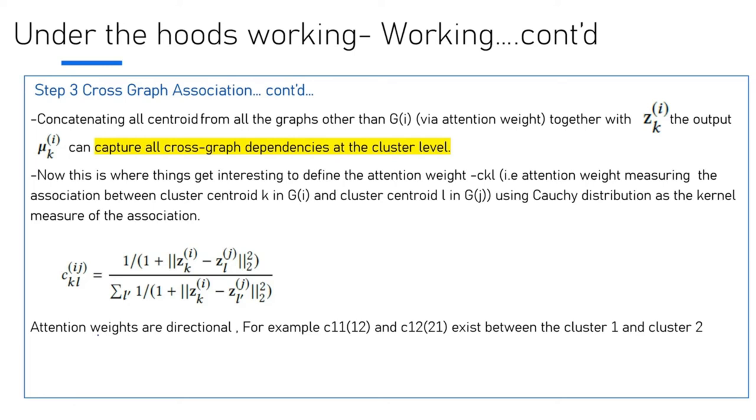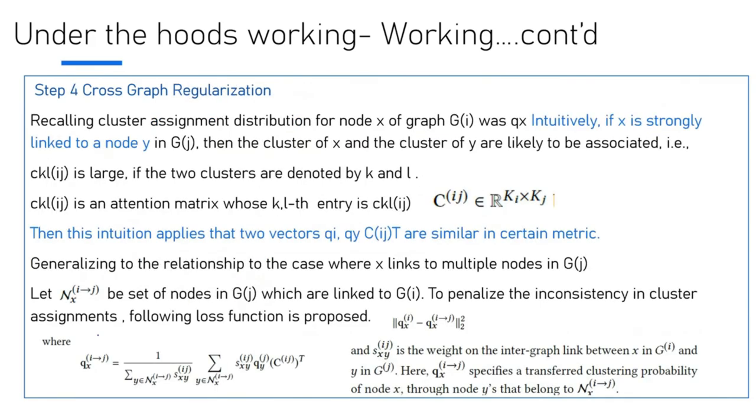Furthermore, now that we have associations between clusters defined, we want to regularize the findings. Recalling the cluster assignment distribution of node X in graph G_I is Q_X. Intuitively, if X is strongly linked to node Y in G_J, then the cluster of X and cluster of Y are likely to be associated. That is, C_KL_IJ is large, and the two clusters are denoted by K and L. Now C_K_IJ is essentially an attention, so scaled entry is C_KL_IJ. This intuition applies that two vectors Q_I and Q_I times C_IJ transpose should be similar in certain metrics.